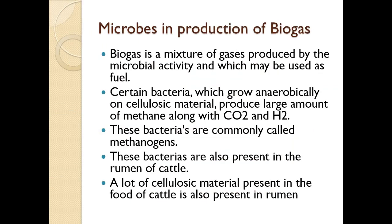Biogas is a mixture of gases produced by microbial activity, and it can be used for various purposes like lighting and cooking. The bacteria involved are strictly anaerobic, meaning they grow in the absence of oxygen. They grow anaerobically on cellulosic material — they digest it and produce large amounts of methane, along with carbon dioxide and hydrogen. So biogas is a mixture of methane, carbon dioxide, and hydrogen.